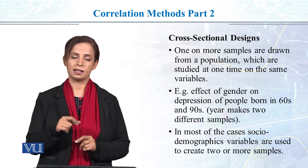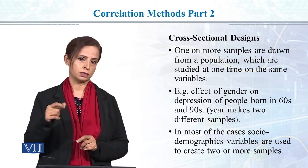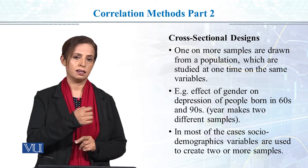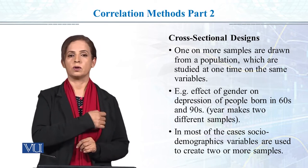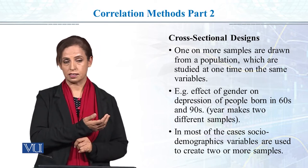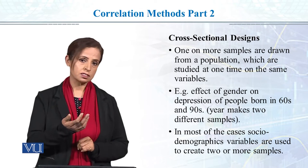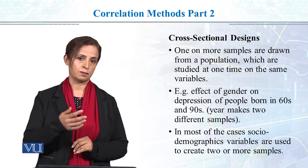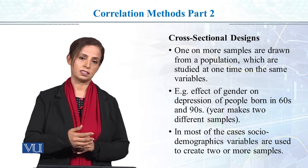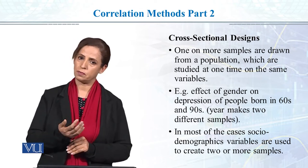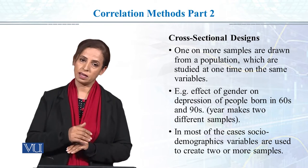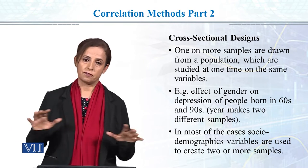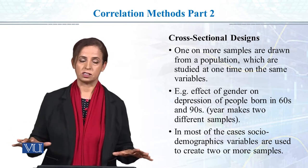I have seen how IQ was in sixth grade, seventh grade, and tenth graders. So this is an example of a cross-sectional design — when you have data from a population under different conditions collected at one point in time.